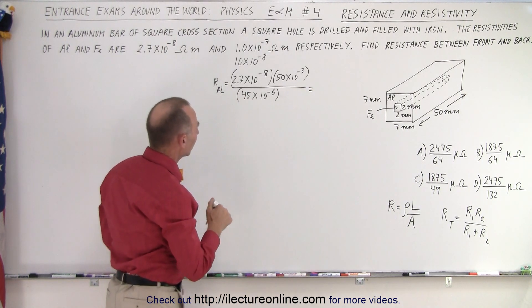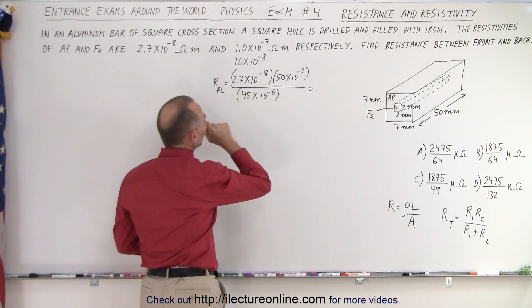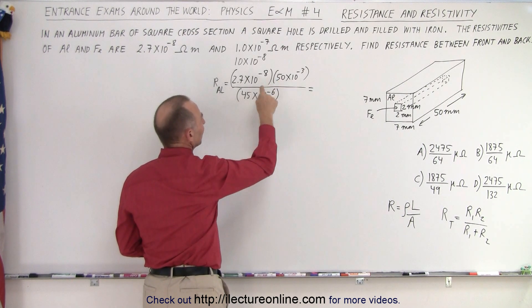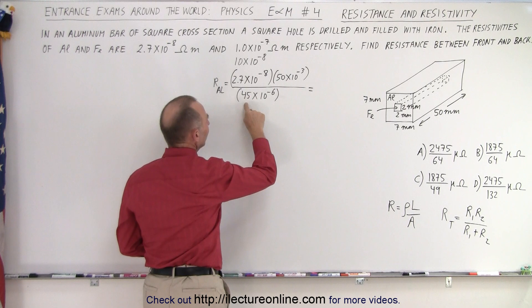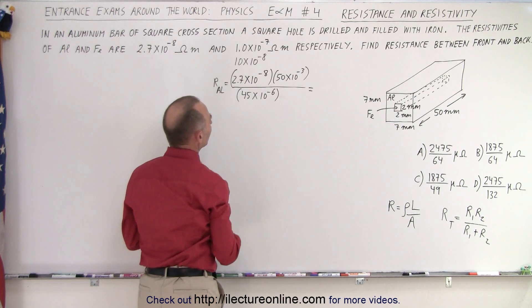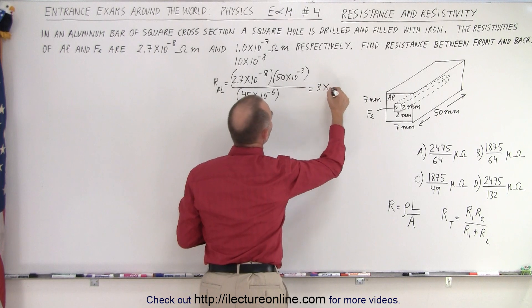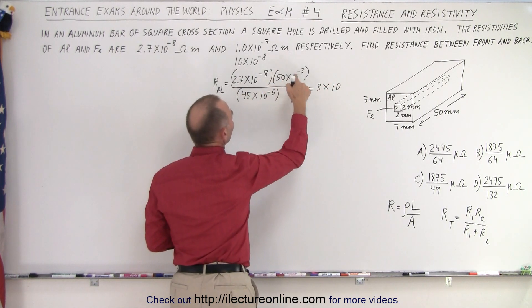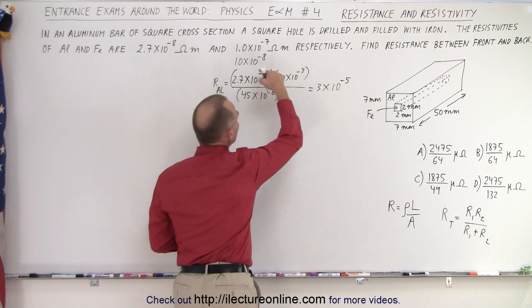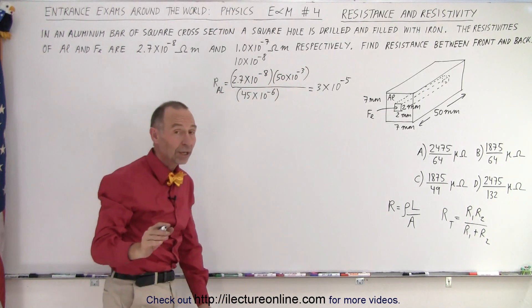Well, first of all, let's simplify this. 50 divided by 45 is 10 over 9. If you divide this by 9, we get 0.3 times 10 which is 3. So we get 3 times 10 to the minus 8 minus 11 plus 6, that would be minus 5. So we need to keep track of the exponents and the number. Notice it's 10 over 9 times 2.7 which is 3.